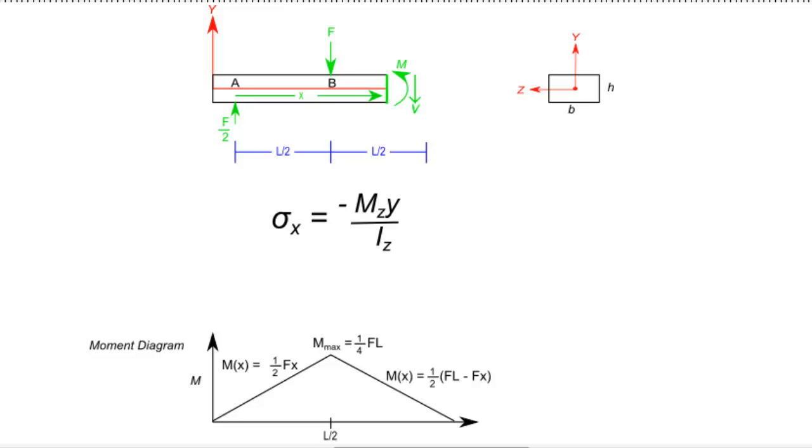Using the bending stress equation and the knowledge that the X axis runs through the centroid of the cross section, we know that the maximum stress occurs at the top and bottom surface of this beam. We can calculate this stress by inserting the value of the maximum moment FL over 4, the distance from the neutral axis, plus or minus H over 2, and the area moment of inertia about the Z axis, 1/12th BH cubed, into our stress equation. Furthermore, this equation can then be simplified into a much more usable form.